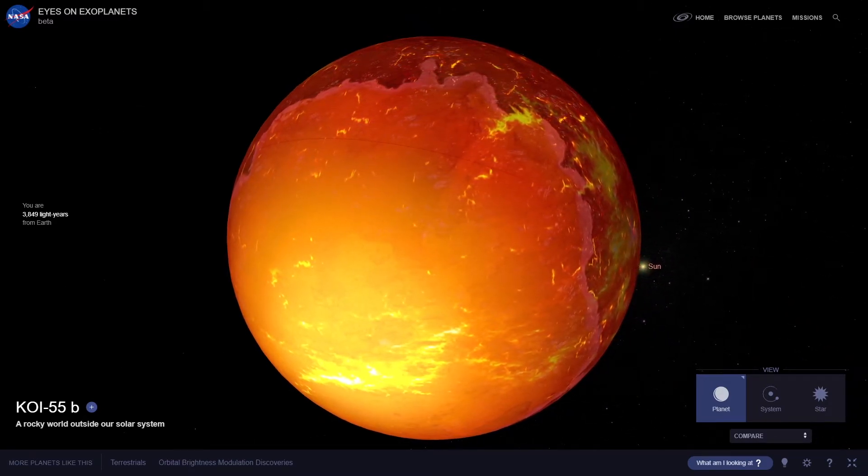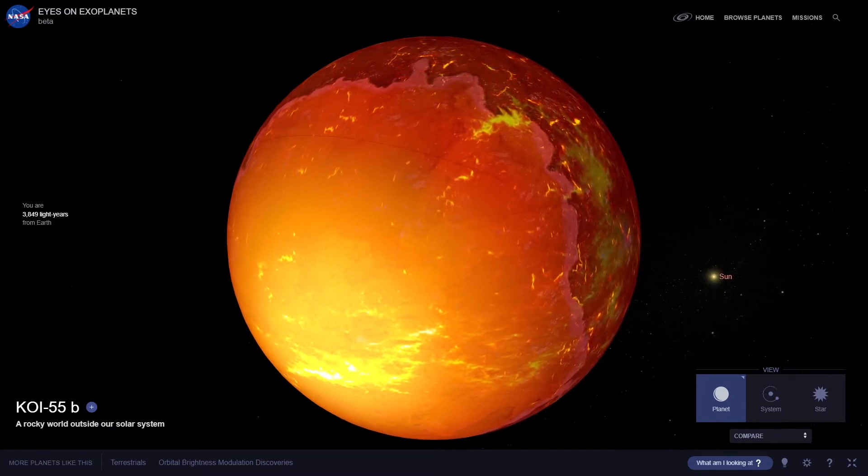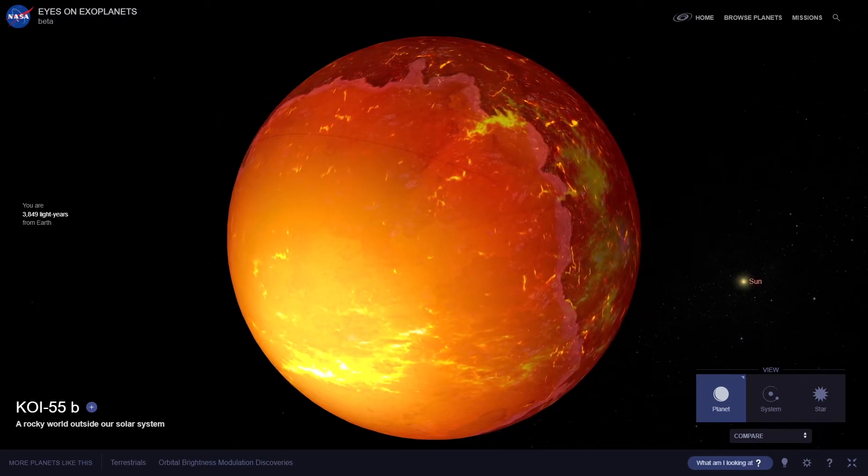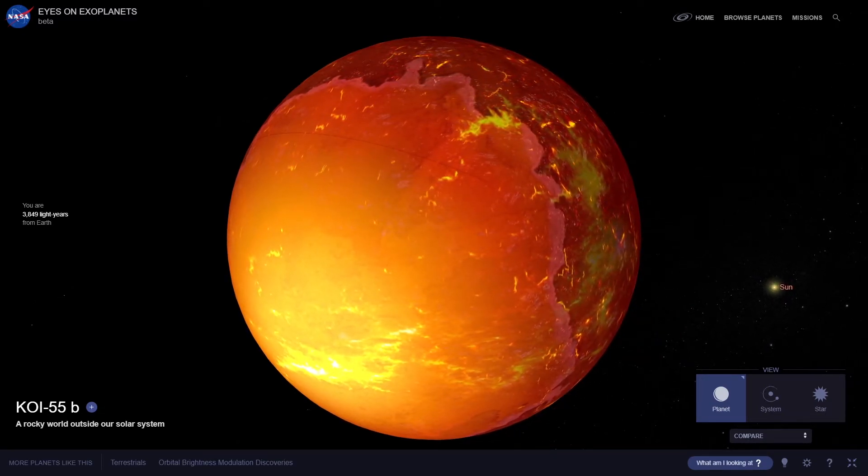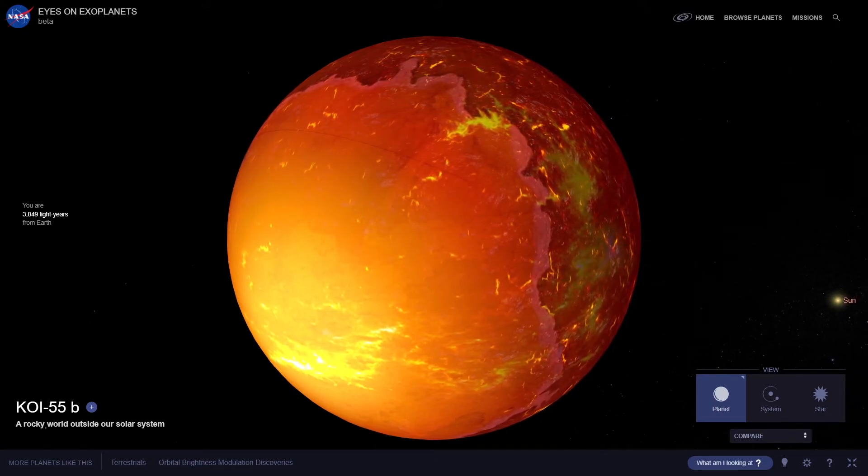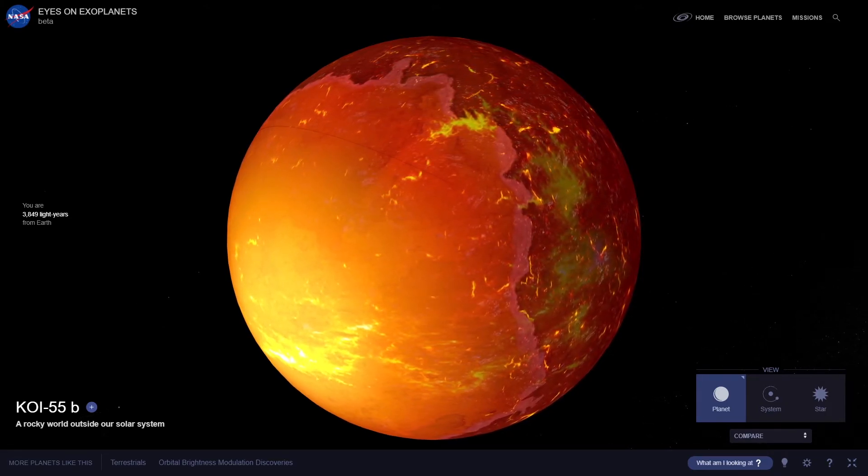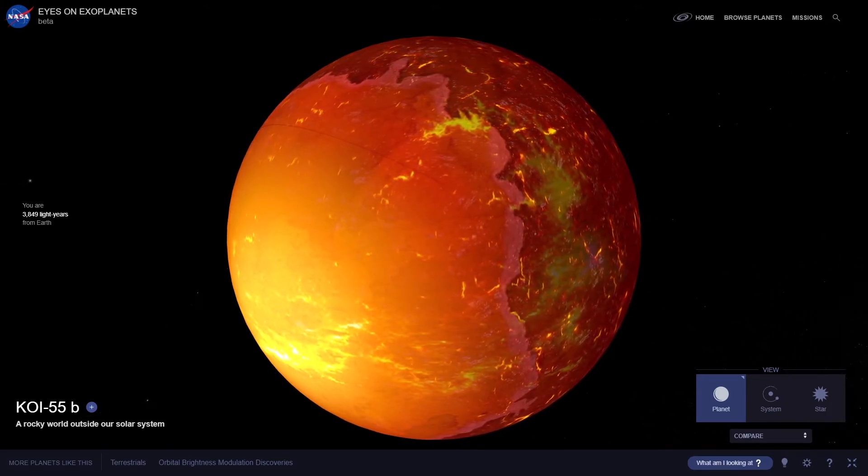So a year on this planet is just 5 hours. Needless to say, this planet is going to be super hot. The temperature on this planet is hotter than the surface of our sun. Kepler 70b is one of the hottest planets astronomers have ever discovered in the entire universe.